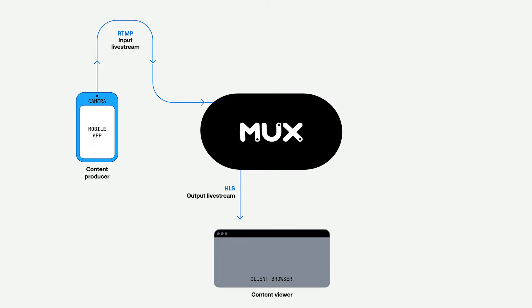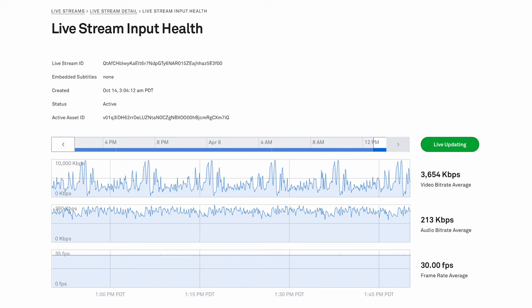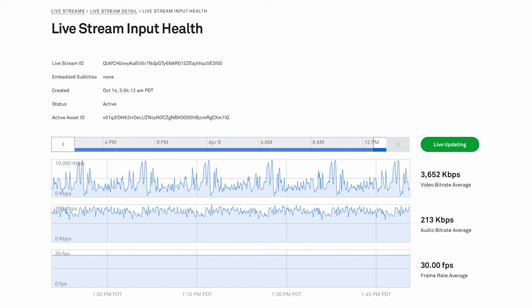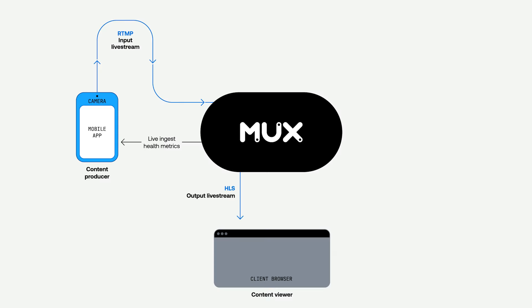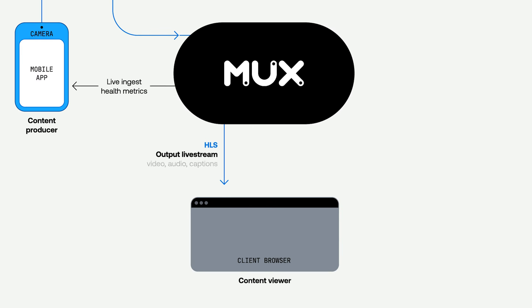In this particular instance, we're making use of the live ingest health metrics feature, where Mux pushes information about the network stability to the content creator so that they know how well the stream is making it to Mux. On the output side towards the bottom, we have the HLS stream going to your content viewer, and that includes your video, audio, and captions.